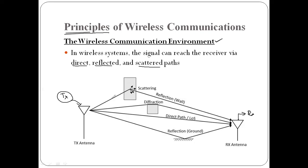An electromagnetic (EM) wave travels from transmitter to receiver. One of these paths is the direct path, where the EM wave travels directly from the transmitter to the receiver without obstruction.